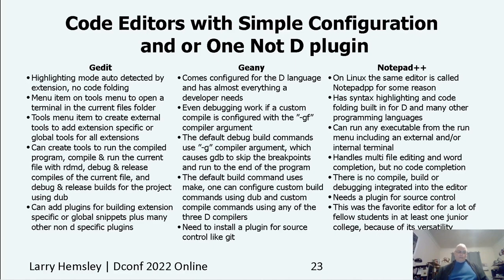Using the default debug compile configuration calls the GDB debugger, which skips breakpoints and exits the program unless the getchar function is used to hold the terminal open. The default build commands are configured to use make, but custom build commands can be configured to use dub instead. You can also configure custom compile commands using any of the available three compilers. You need to install a plugin to have source control. Notepad++ is another one — it's Windows only, though on Linux it's called Notepad-pp and is very much the same.